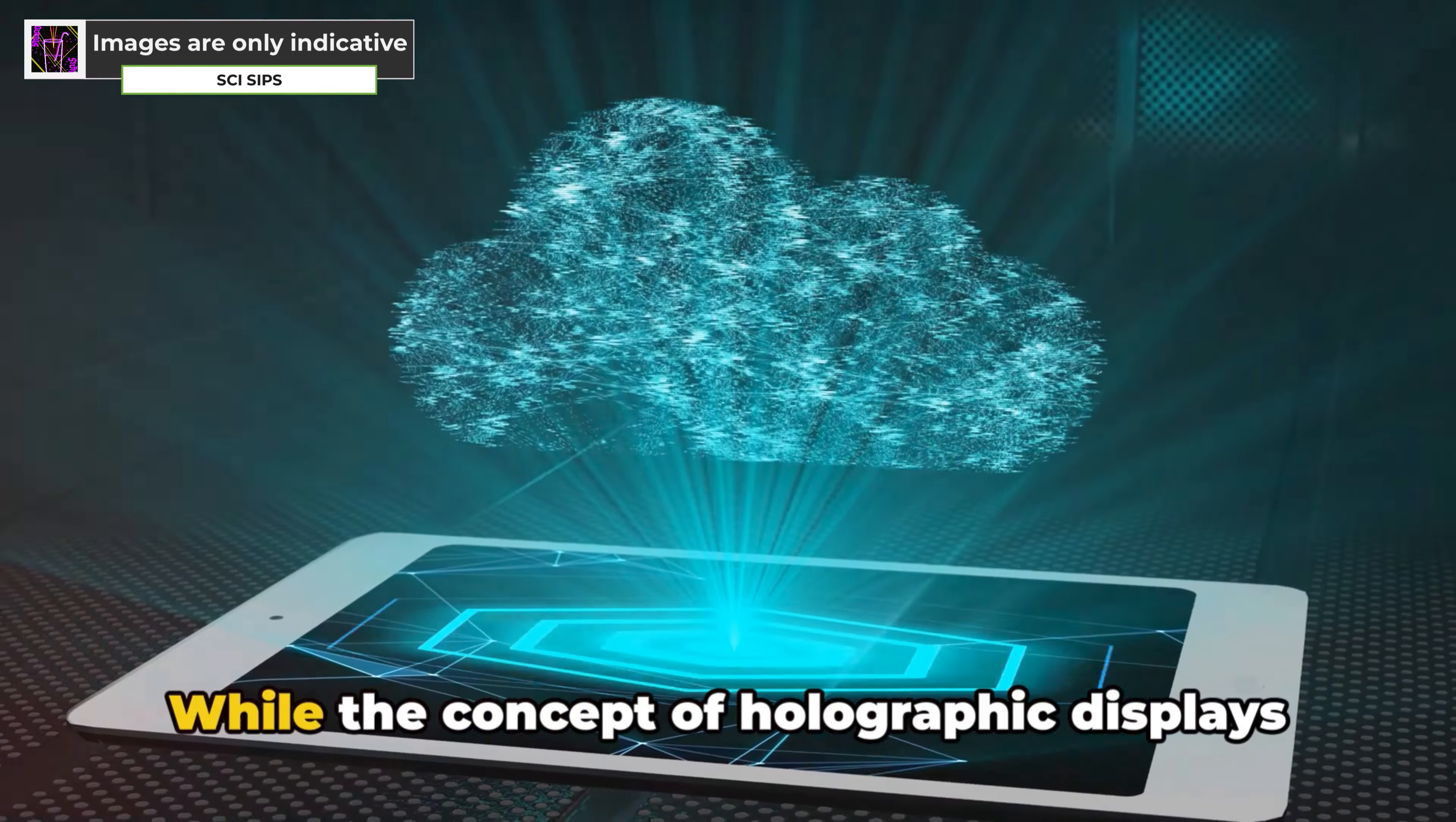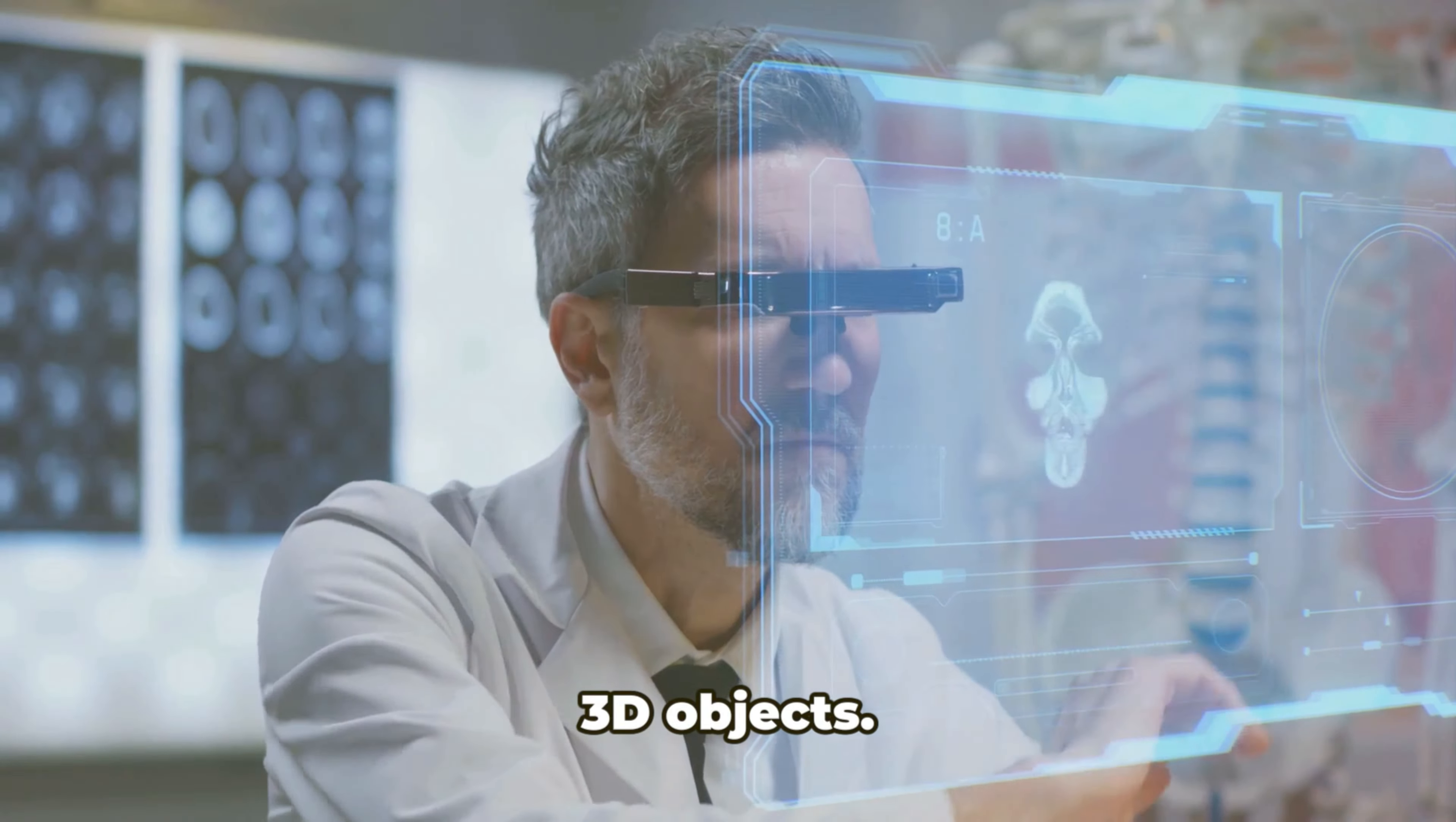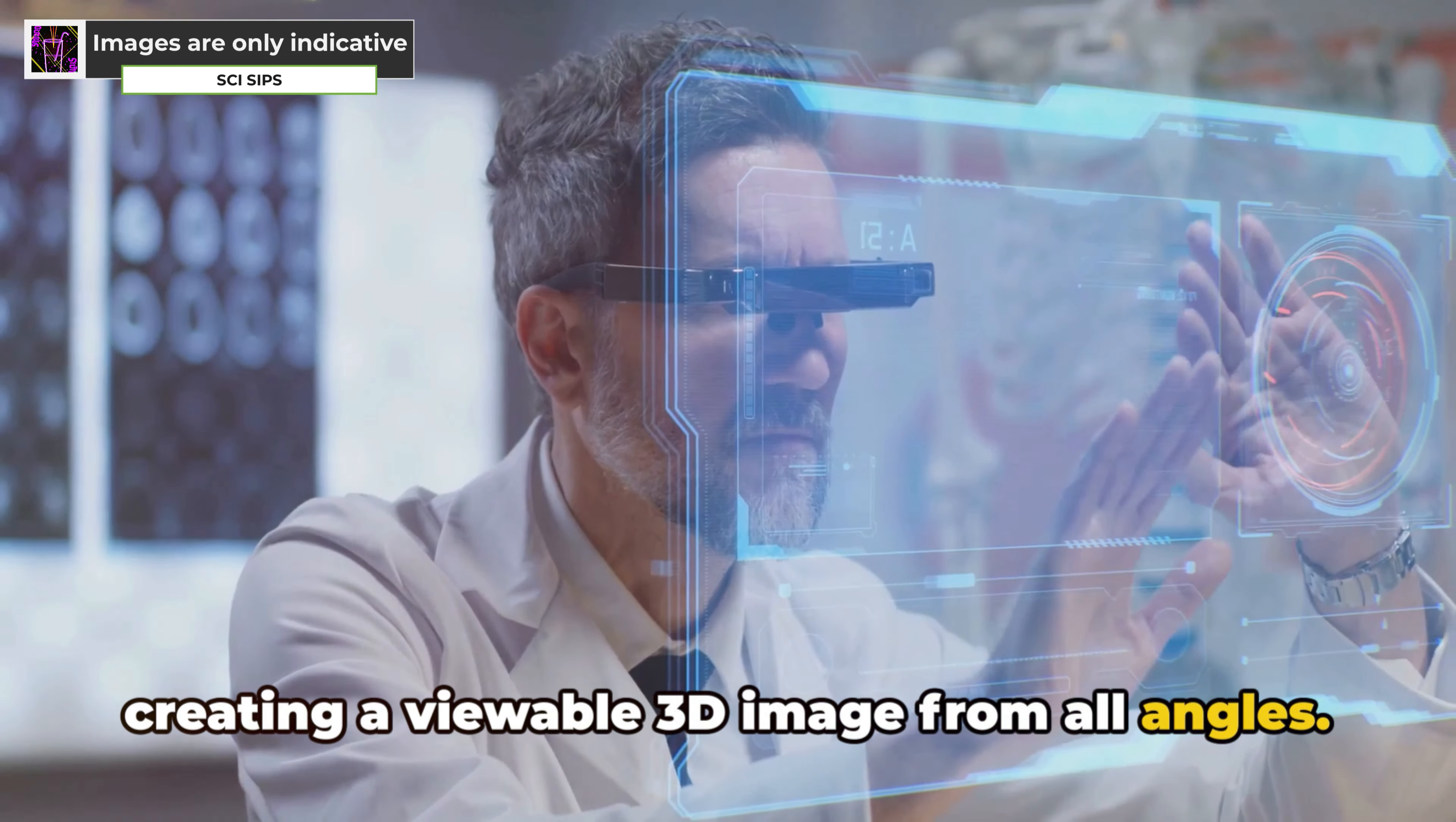Researchers at MIT in 2013 developed a holographic television display system that used a Microsoft Kinect camera to capture 3D objects. The captured image is then processed and displayed using a series of laser diodes, creating a viewable 3D image from all angles.